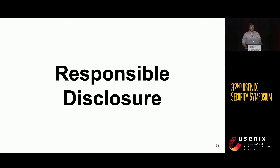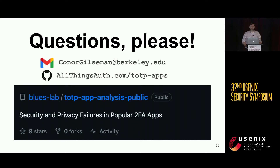Responsible disclosure is particularly important when developers can actually improve and address the issues we found. We contacted the developers of 14 of the 22 apps to report substantive issues and gave them at least 90 days to respond before we submitted our paper to Usenix. Unfortunately, six ignored us, but we did hear from eight. I don't have time to go into the details of those responses here, but I'd love to talk about it afterwards. Everything we've done is open source, including the decryption scripts for each app and the steps we took while recording traffic — I'd encourage you to go to the GitHub repo to verify our work or reproduce it yourself.